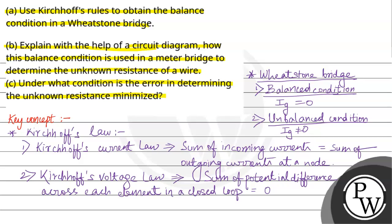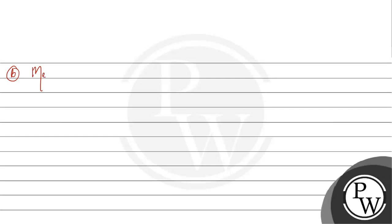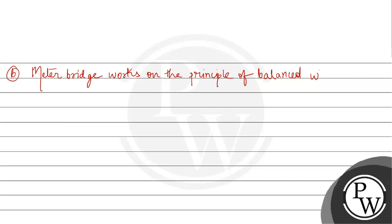This is the second part: explain with the help of a circuit diagram how this balance condition is used in a meter bridge to determine the unknown resistance of a wire. The meter bridge works on the principle of the Wheatstone bridge. Here is the circuit diagram.